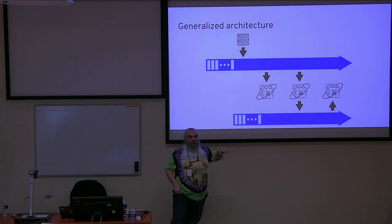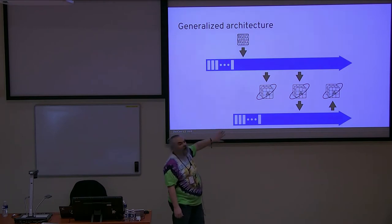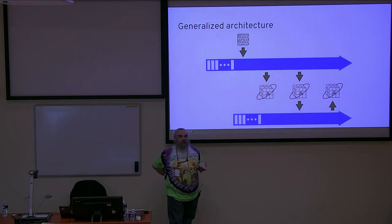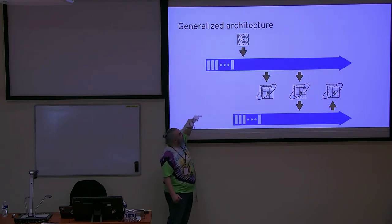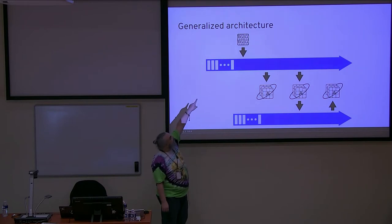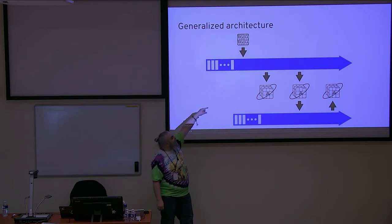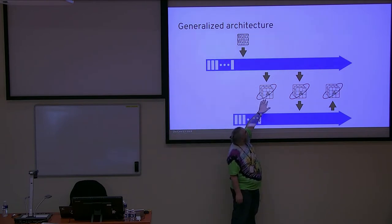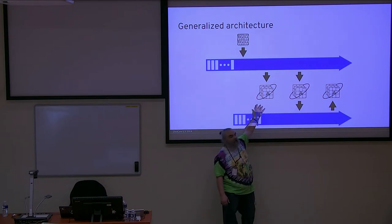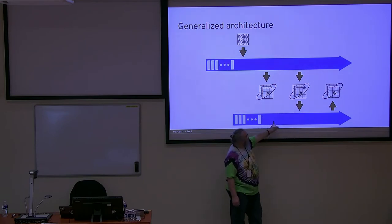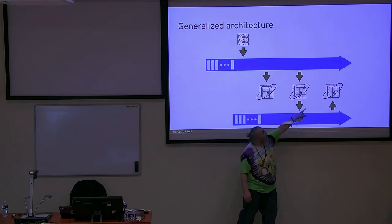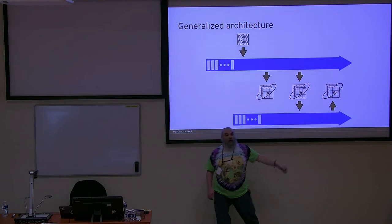This is the generalized architecture we're going to play with: we have two topics on our stream using Kafka. We have a data generating service that pushes data into the first topic. Then an application that just reads from that topic to observe the data. Another application takes the data, does something with it, and plays it out onto the second topic. And another application reads from that second topic so we can verify what's happening.